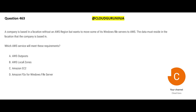Let's look at this question. A company is based in a location without an AWS region — somewhere in Alaska, maybe — and it wants to move some of its Windows file servers to AWS. The data must reside in the location where the company is based. Which service should we use? Should it be Outpost?